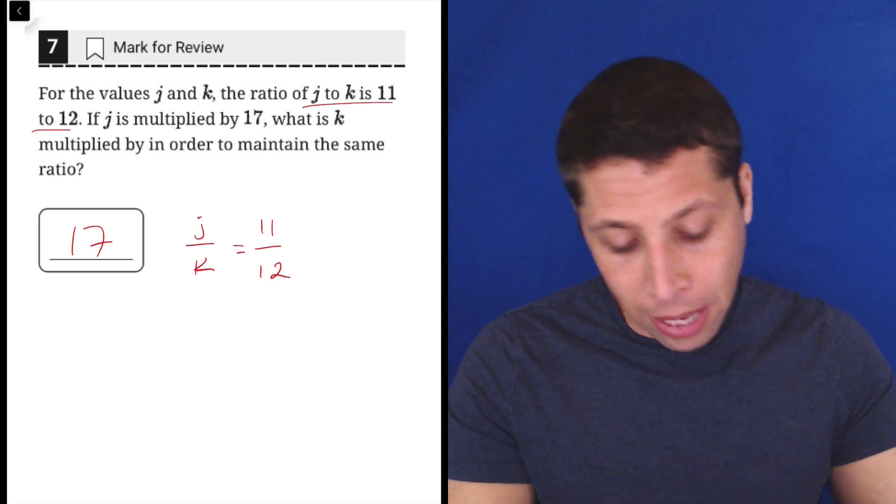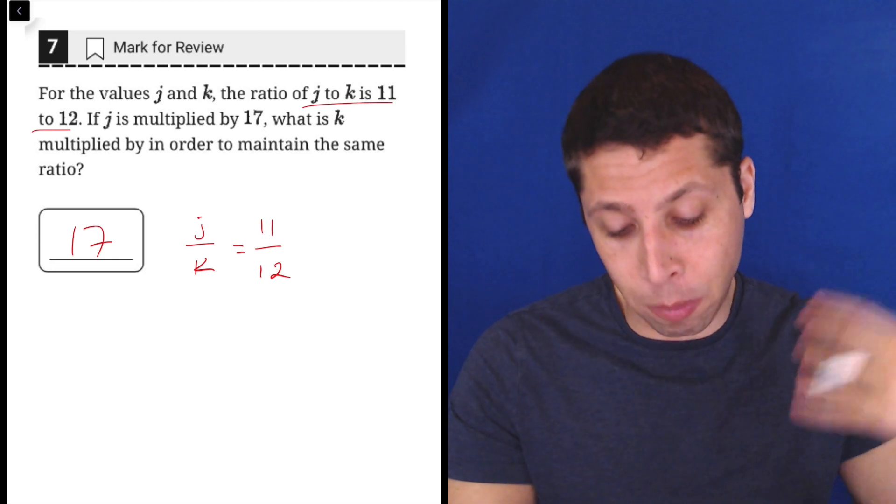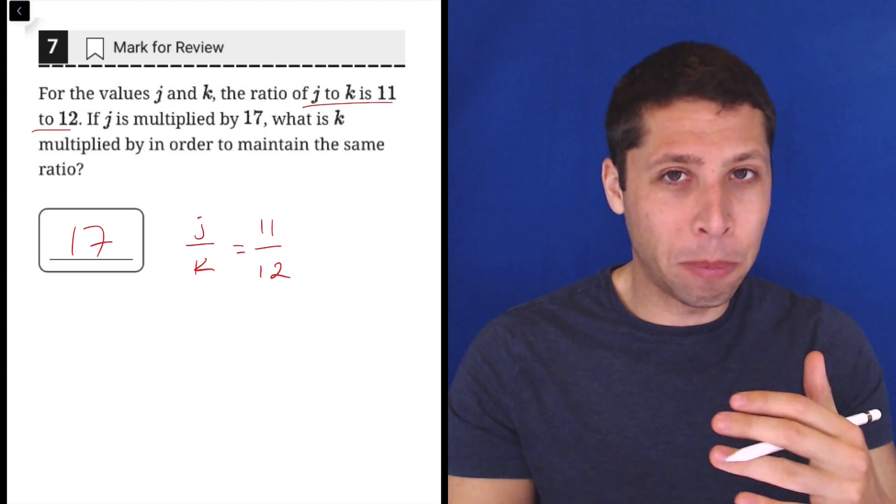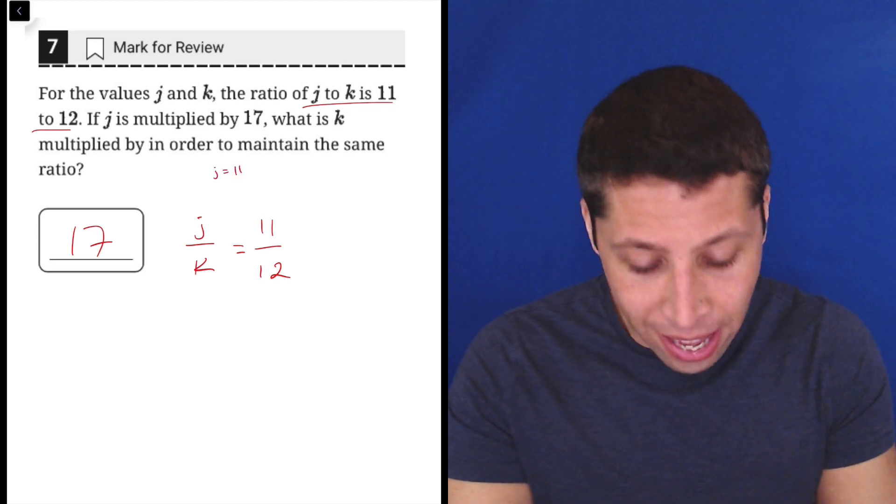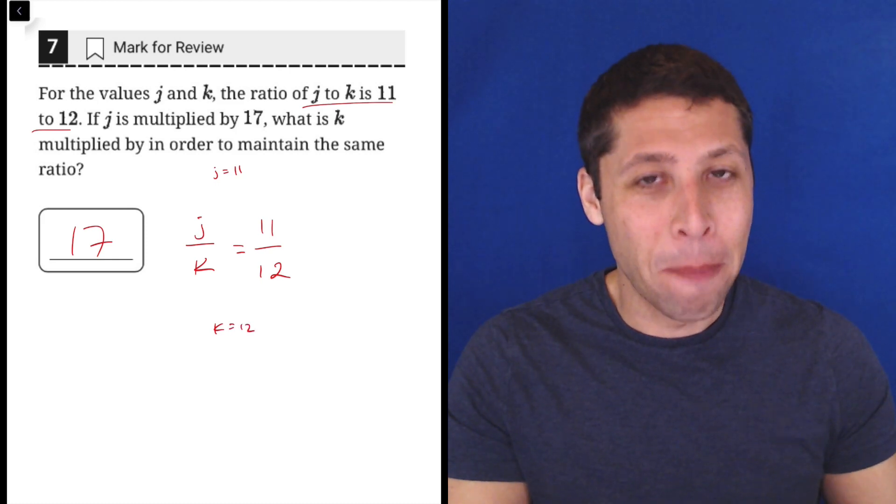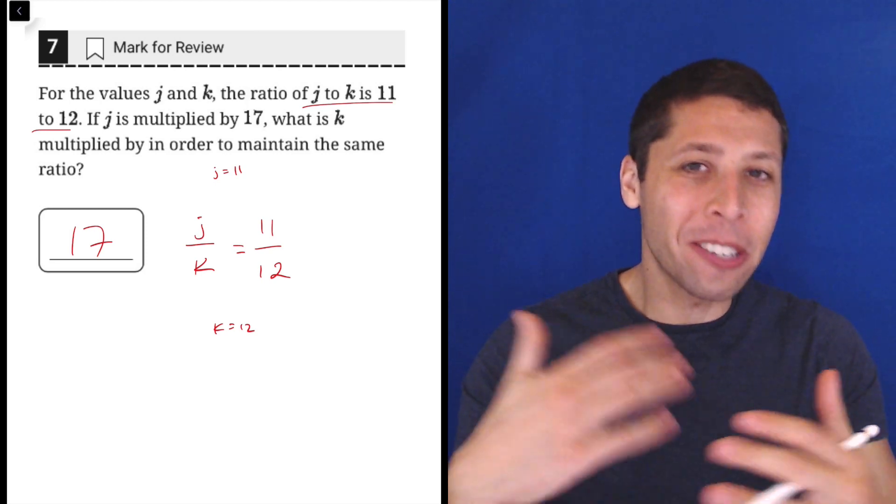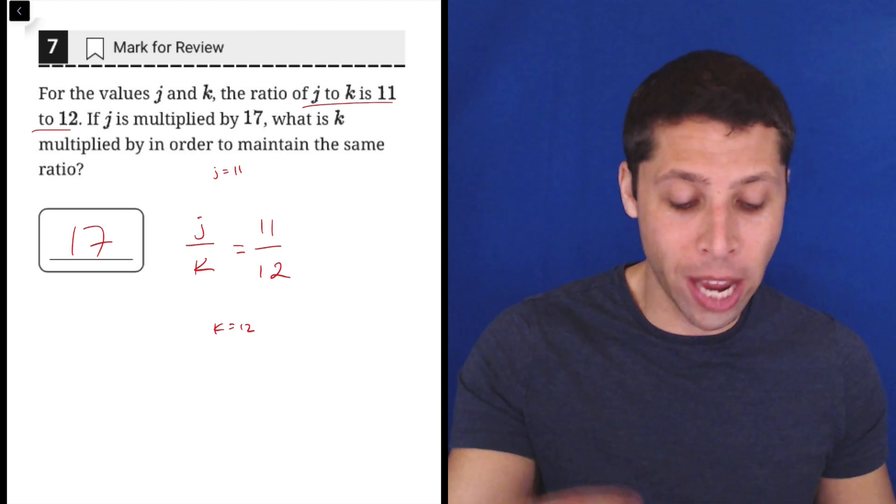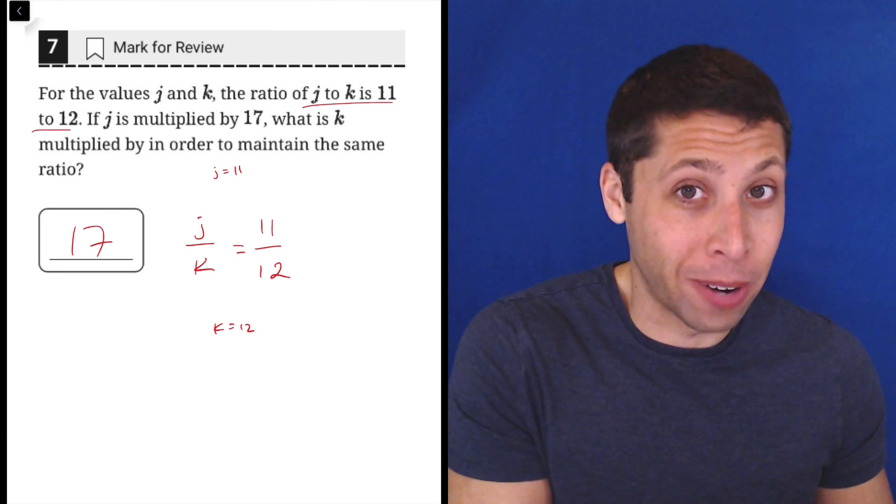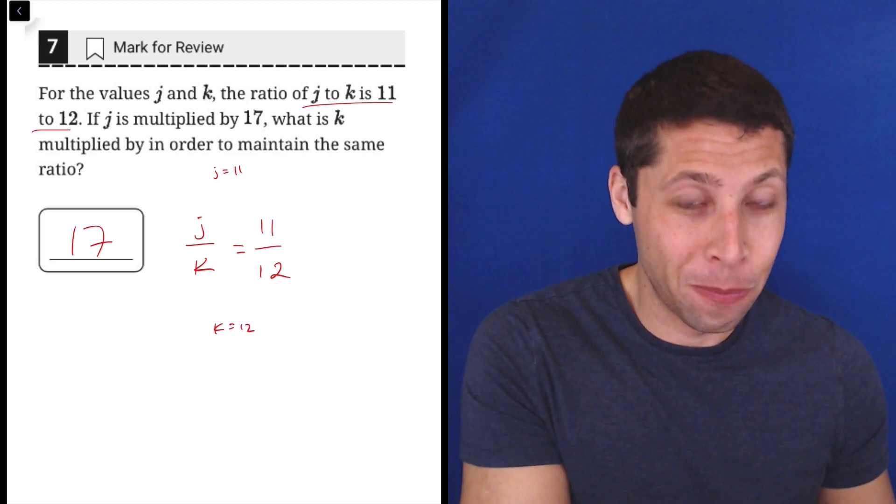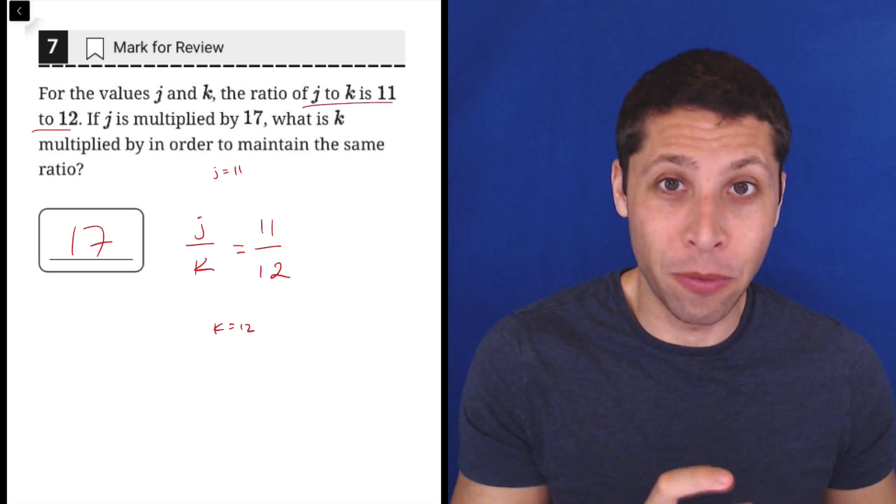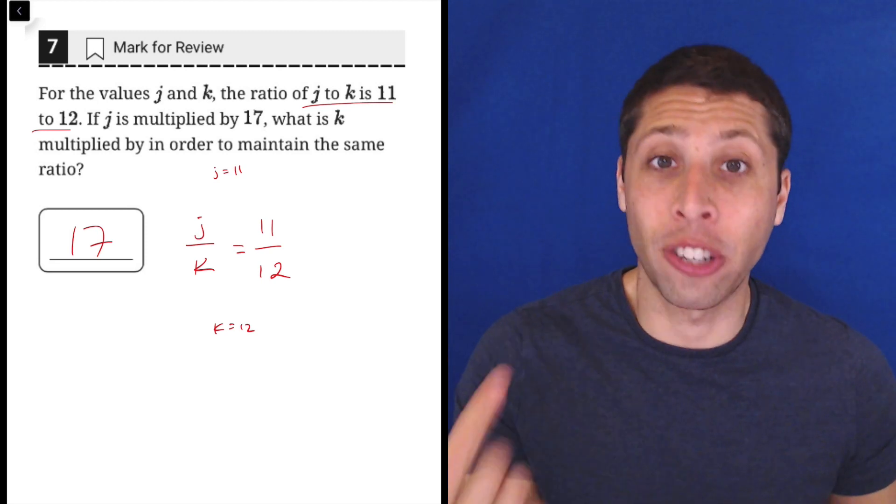So if J is multiplied by 17, what is K multiplied by in order to maintain the same ratio? So the easiest thing to kind of do here is just pretend that J is 11 and K is 12. They don't have to be, but no matter what they are, they're going to still reduce to that. It could be the case that J is 22, in which case K would be 24. 11 times 2 is 22, and 12 times 2 is 24. So 22 divided by 24 reduces to the same fraction, 11 divided by 12.